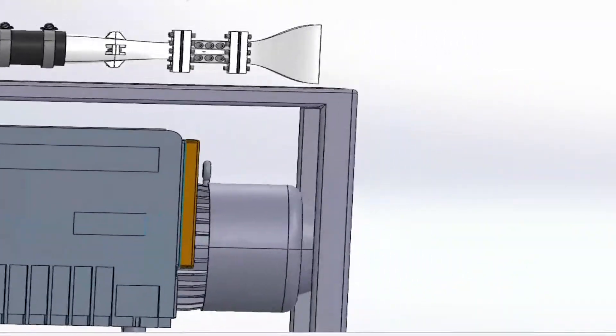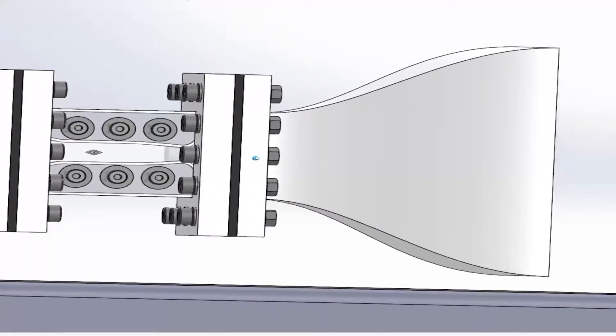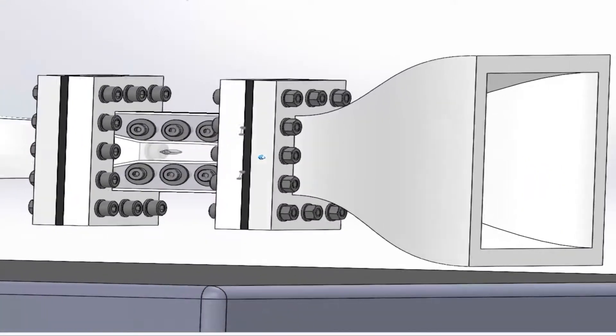First, we have the 3D printed converging inlet nozzle. This allows air entering the system to stabilize before entering the tunnel itself.